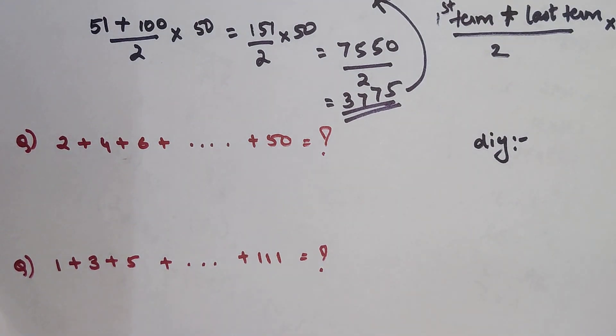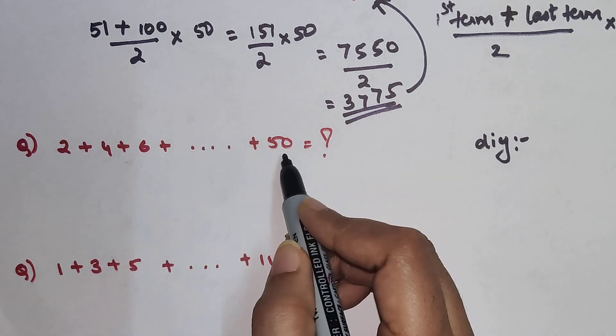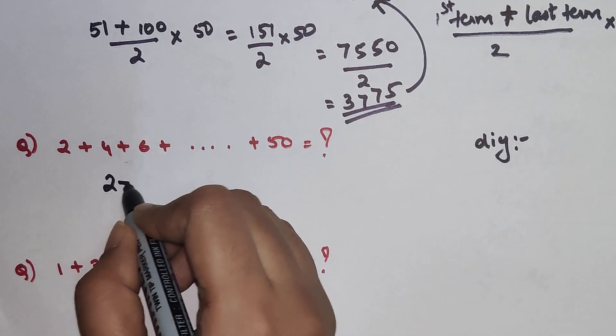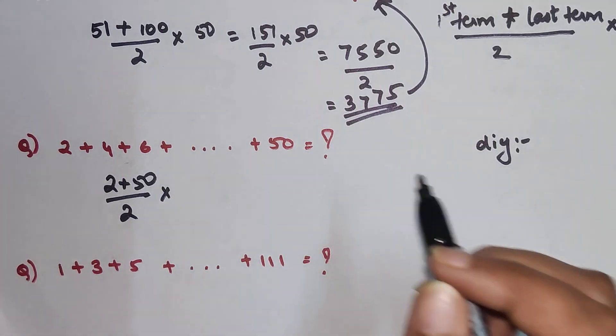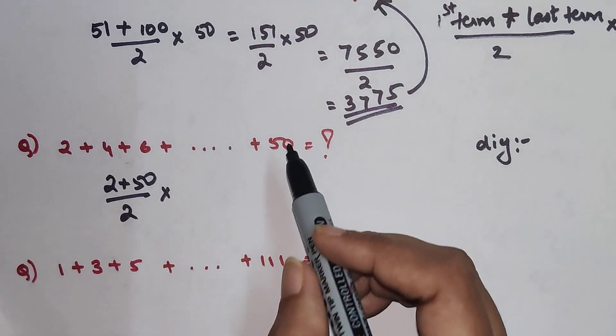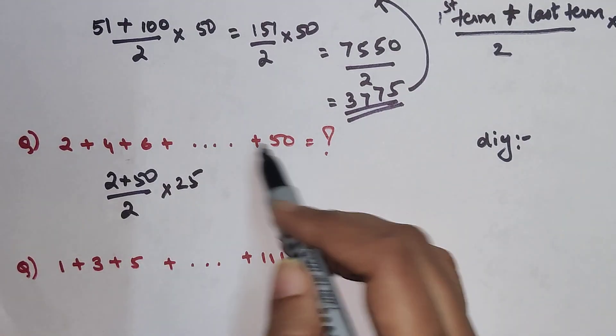For this particular one we have 2 going up to 50. We will do 2 plus 50 divided by 2, times the total number of terms. The total number of terms in this case will be 50 divided by 2, which is 25.